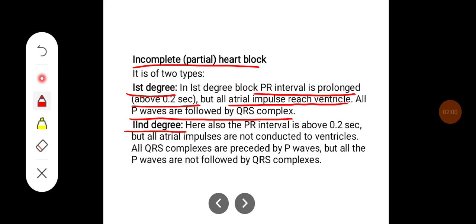In second degree heart block there is also a prolonged PR interval above 0.2 seconds, but all atrial impulses are not conducted to ventricles. All QRS complexes are preceded by P waves, but all the P waves are not followed by QRS complexes.